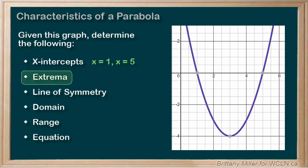The extrema always occurs at the vertex. The vertex of this function is (3, -4). The parabola opens upwards, so this is a minimum of y equals negative 4.